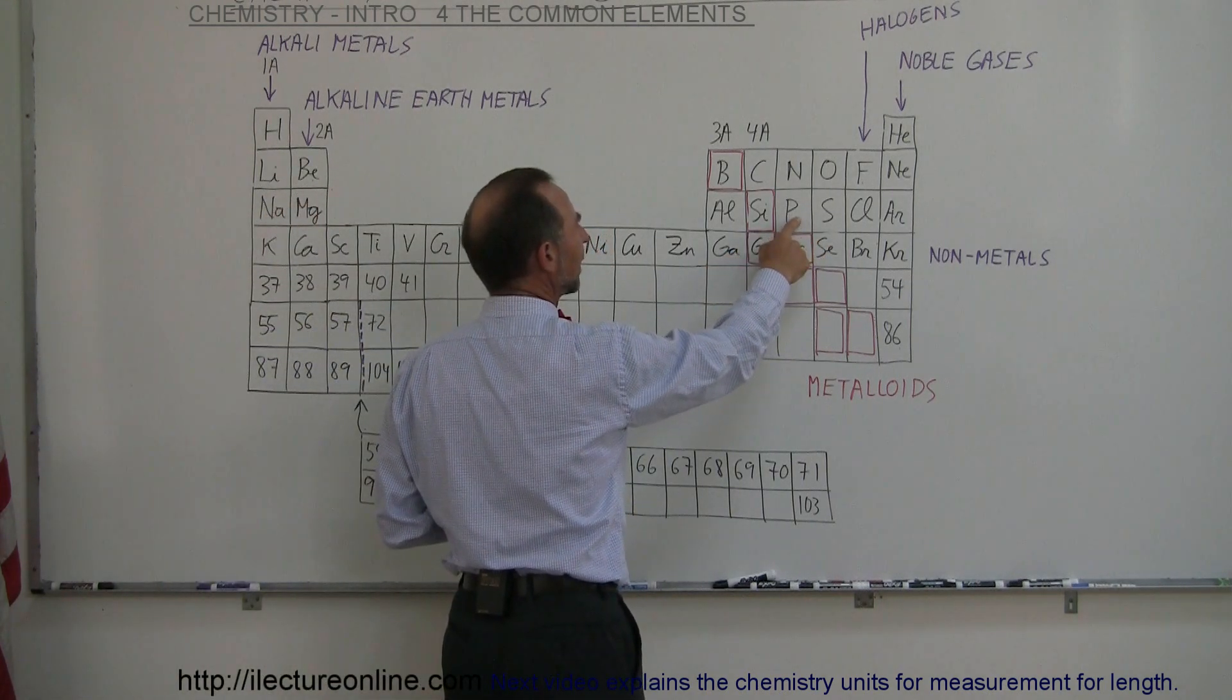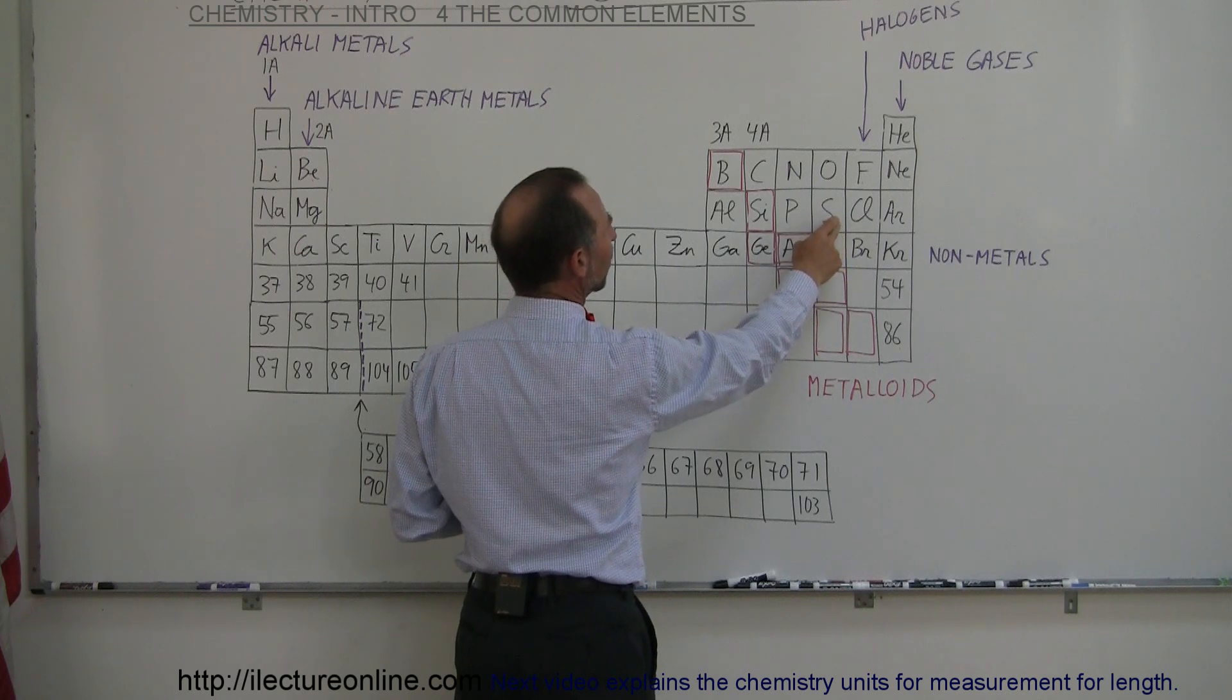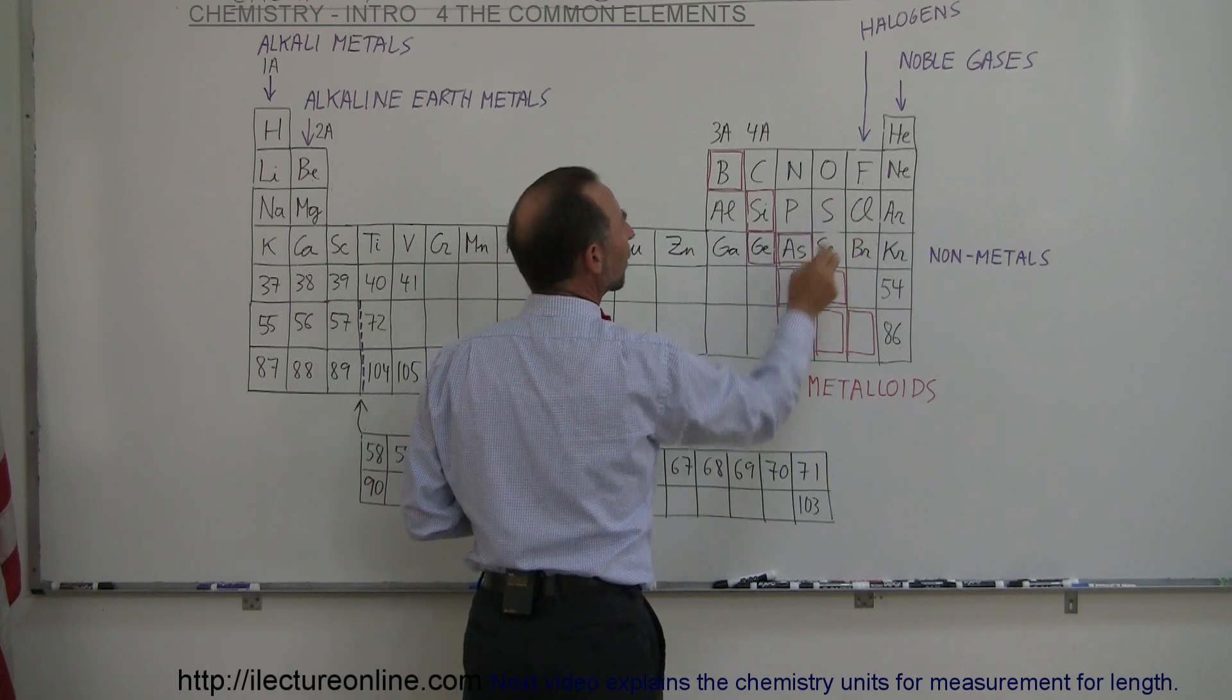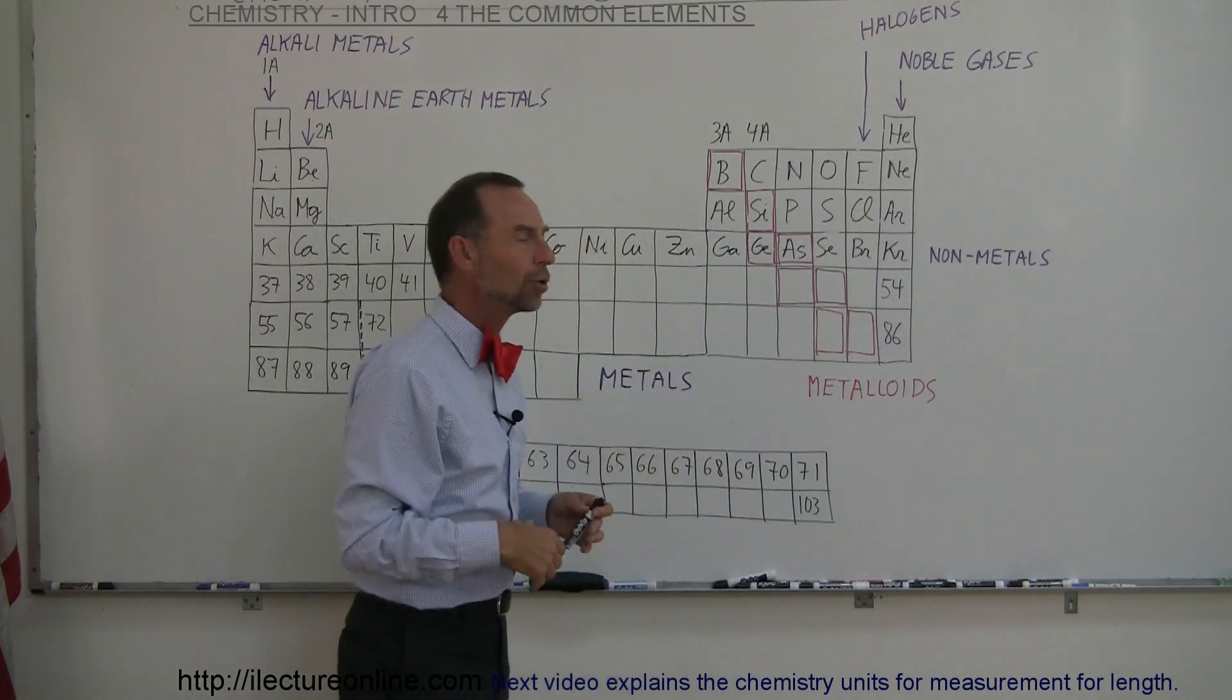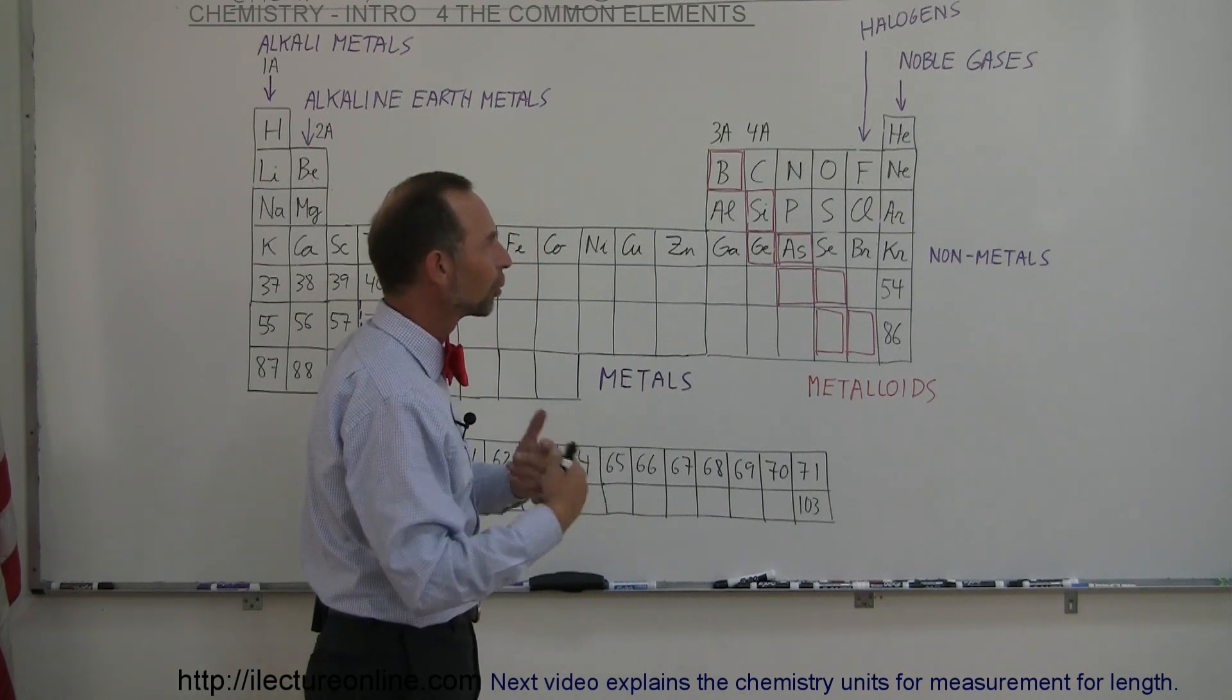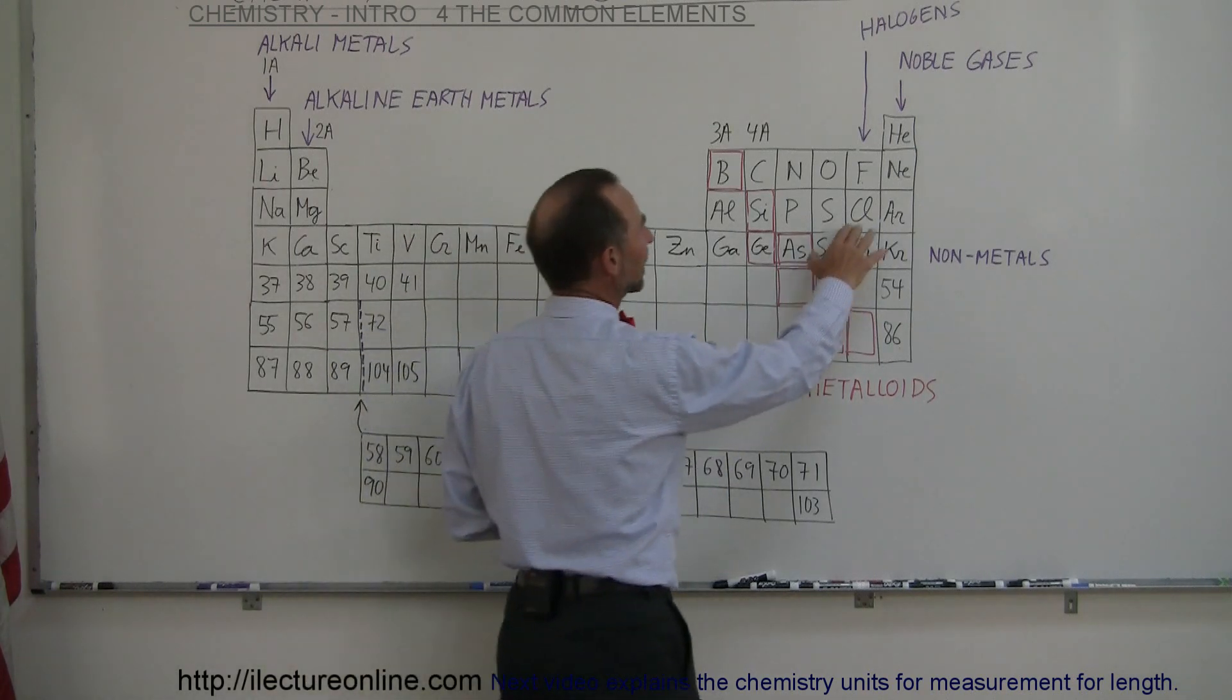We have phosphorus here that we use in matches. We have sulfur. Chlorine is a very corrosive material. We use that to keep things from growing in our swimming pools. It's a good cleaning product.